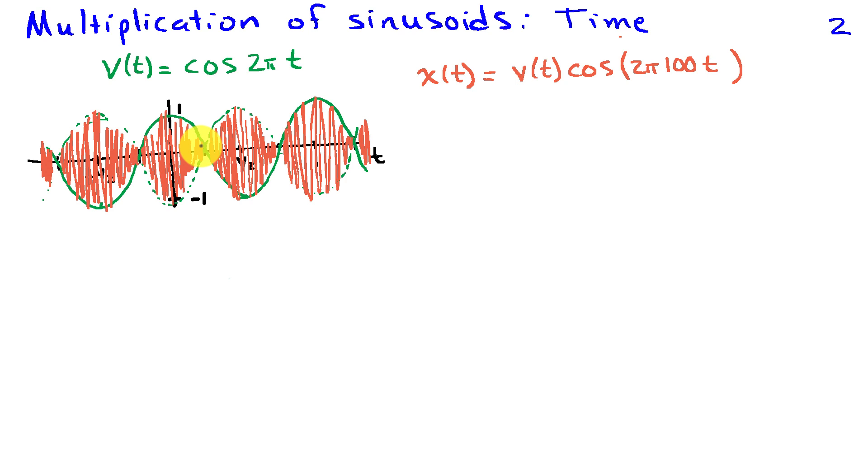By the cosine of 2 pi t sinusoid, the 1 Hz sinusoid. So I have this 100 Hz sinusoid that's oscillating pretty fast and then I have a 1 Hz amplitude variation.